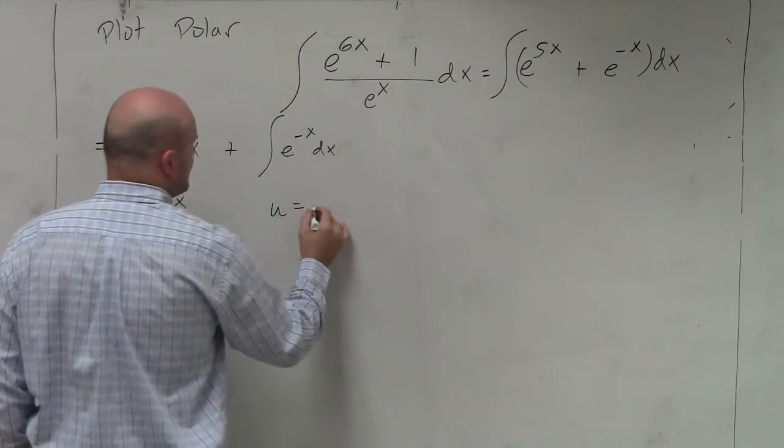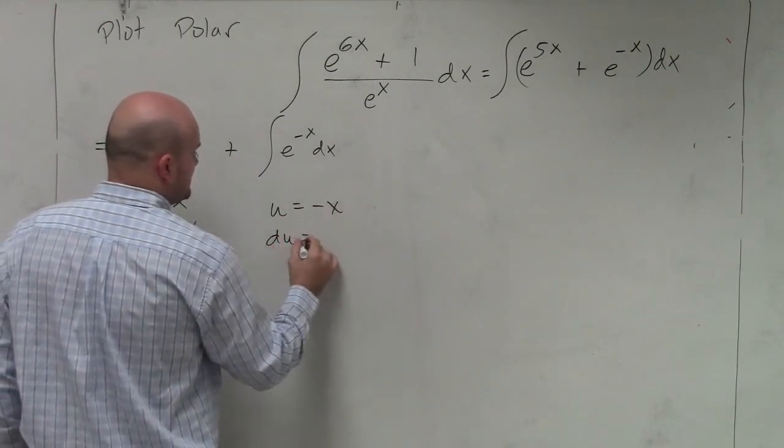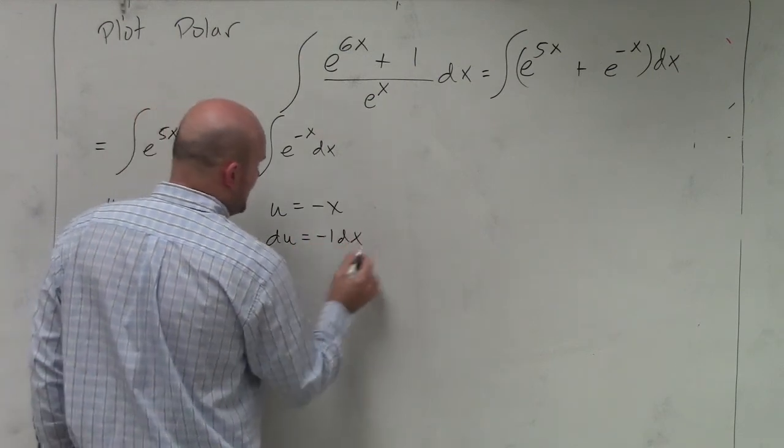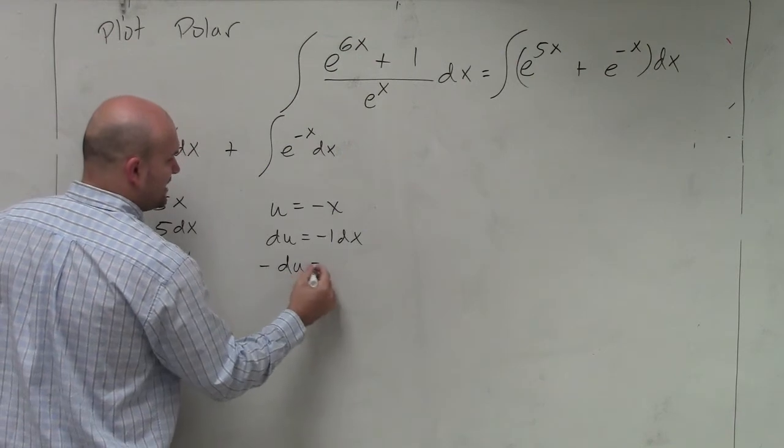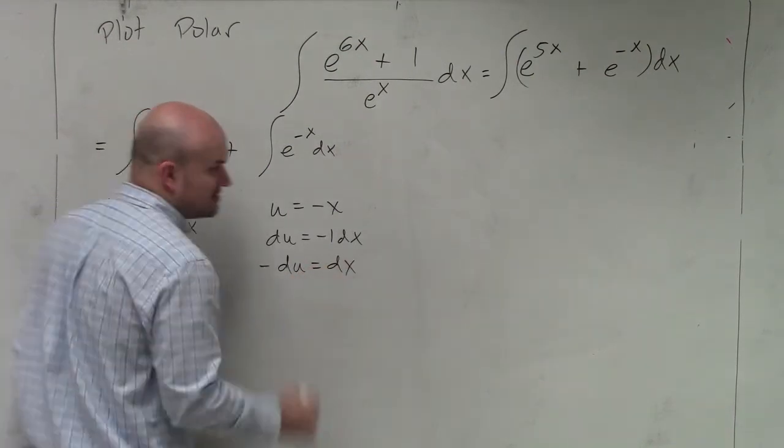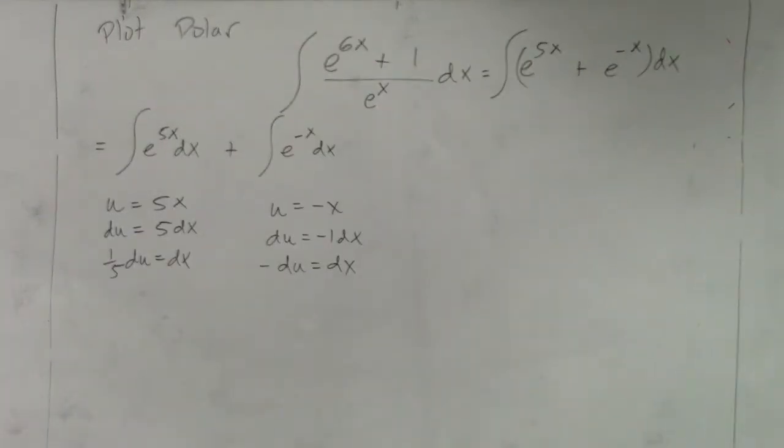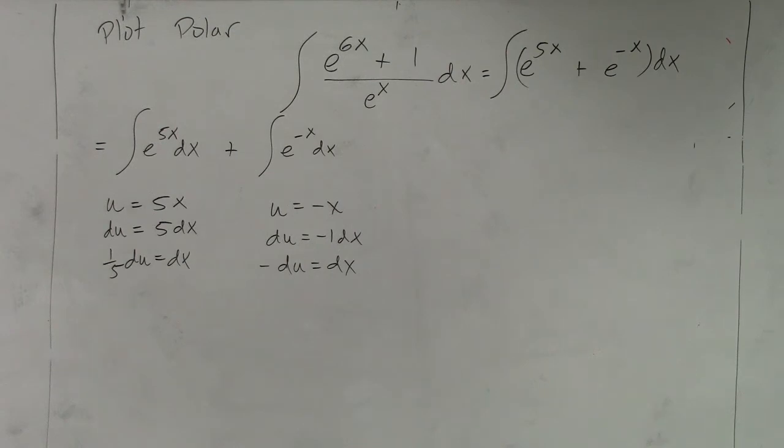Over here, I could say u is equal to -x. du is going to equal -1dx, which again, I don't have any negatives. So I'm going to multiply by -1 on both sides to get dx. Does everybody see how I quickly set up my u-substitution in these two cases? Yes, no, maybe so.